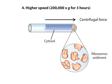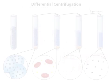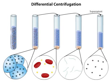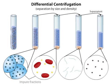This series of spins at higher and higher speeds and durations is called differential centrifugation. In differential centrifugation, subcellular components are separated by their size and density, with larger and denser components sedimenting faster than smaller and less dense components. The fractions obtained correspond to enriched, but still not pure, organelle preparations.